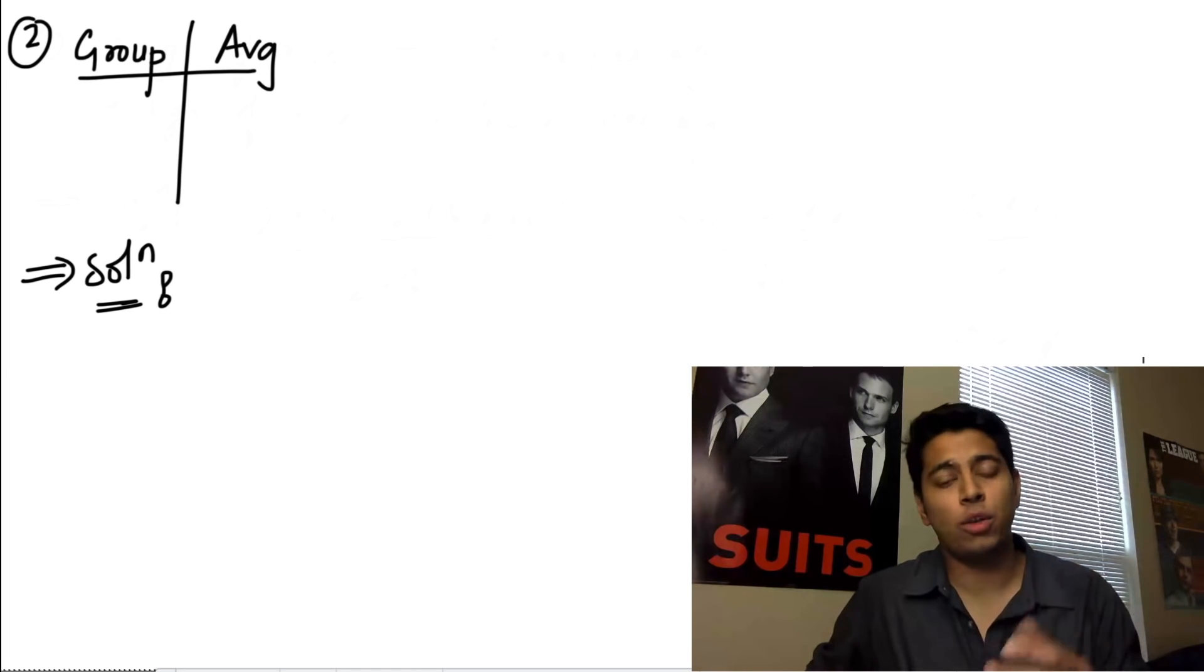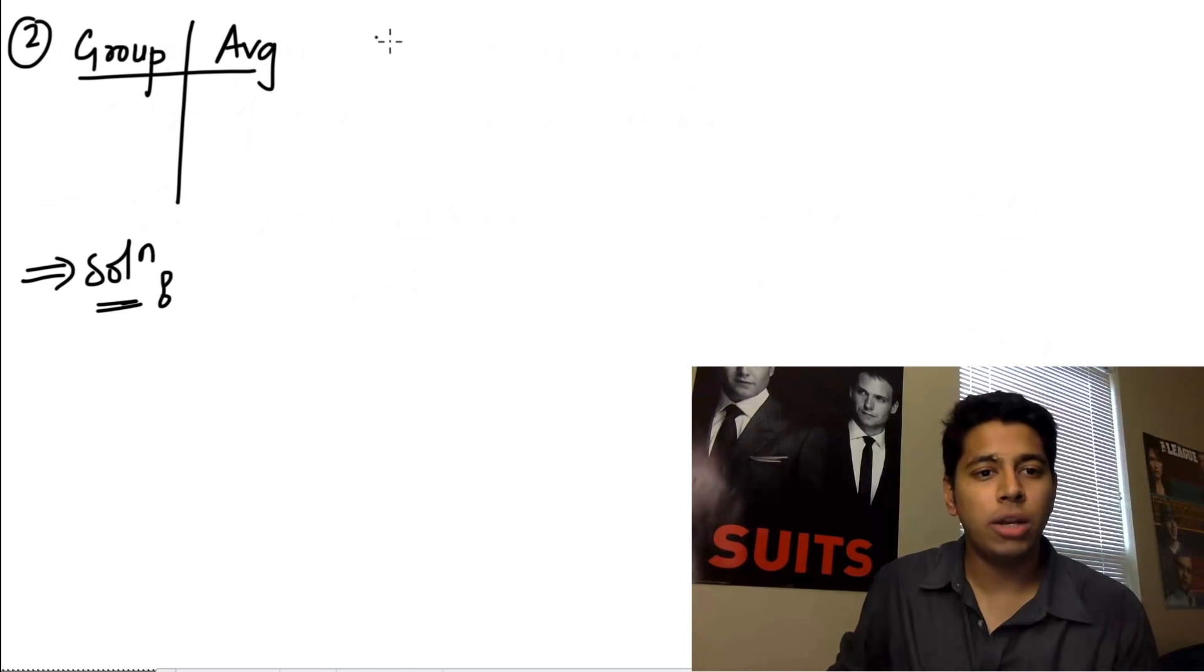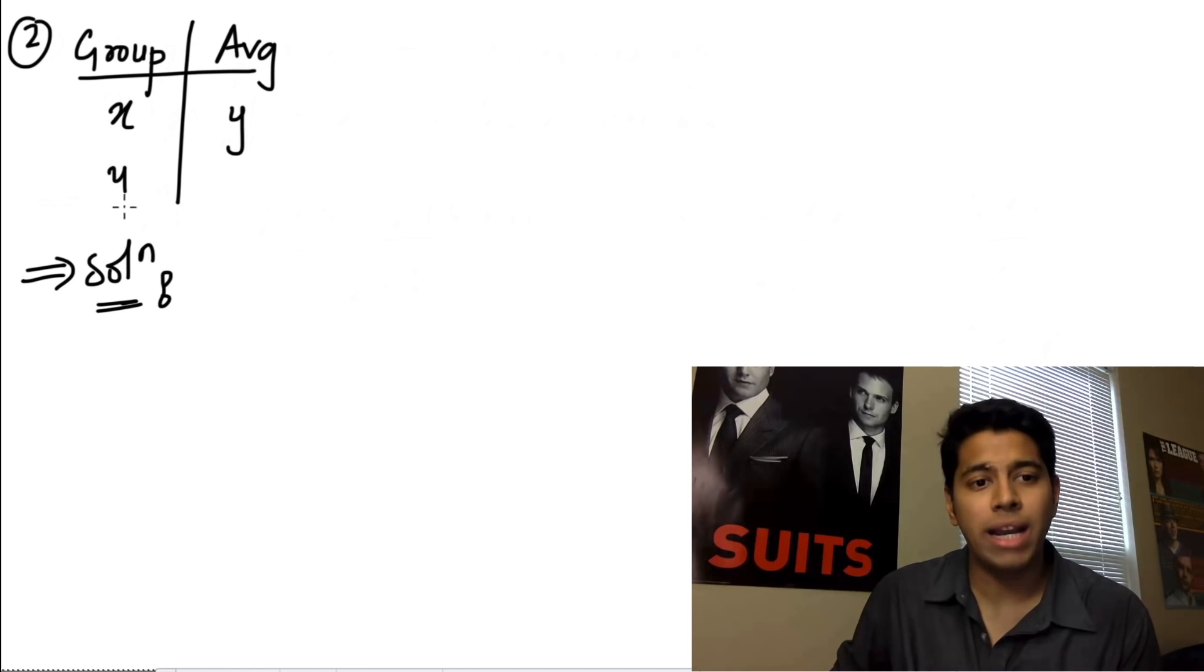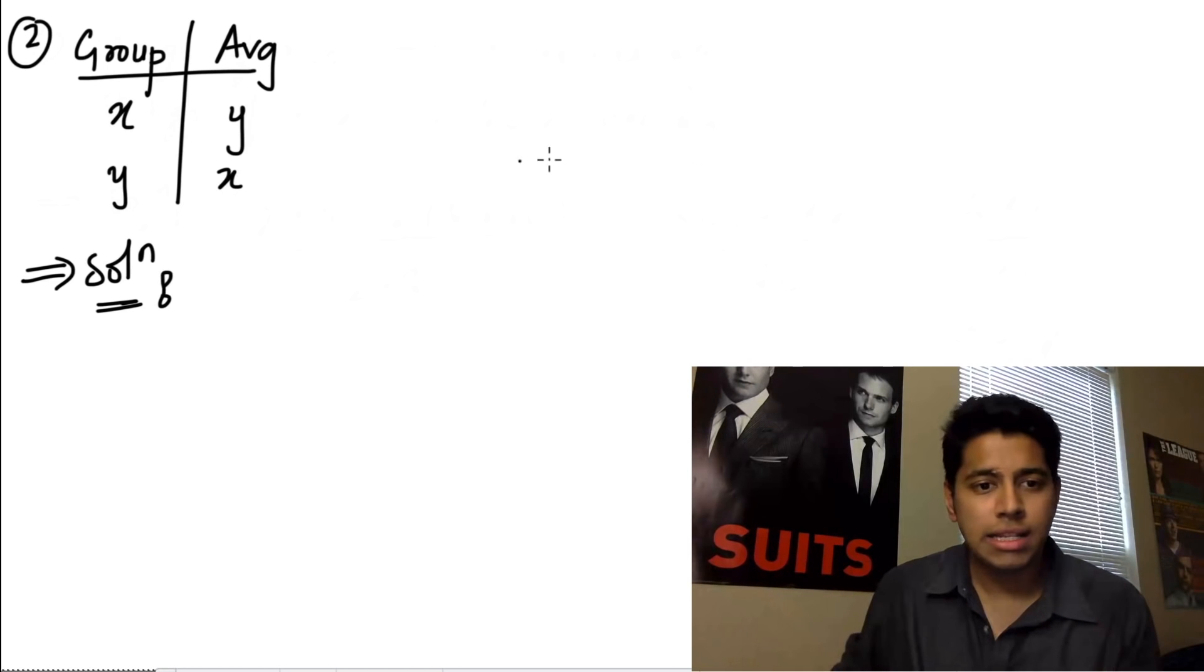Whenever you get something like this and you have two averages, always make this column. Write the group, write the average so that you don't make a mistake. So now, we know that the average of x numbers is y, and the average of y numbers is x. Simple. Now, what we need to find is the average. To find the average, we need to find the sum divided by the total number.